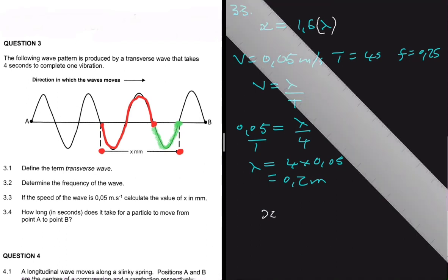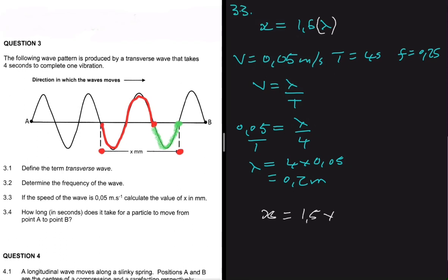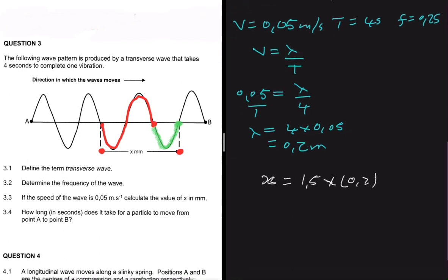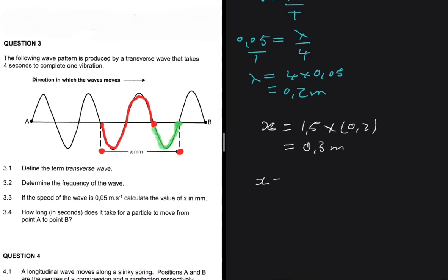Now we can calculate x: x equals 1.5 multiplied by the wavelength of 0.2 meters, which gives 0.3 meters. Since the question asks for the answer in millimeters, we multiply by 1000, giving x equals 300 millimeters.